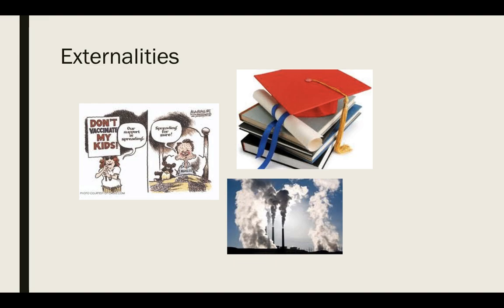To get more things that have a positive externality, the government is going to subsidize or give money to those institutions. We know that when we get shots as very young kids, those are free — the government subsidizes and pays for that because they're so beneficial to everyone. And we know that public education is for the most part free; the government actually subsidizes or pays for everyone to go to school so that we can all benefit from that positive externality.